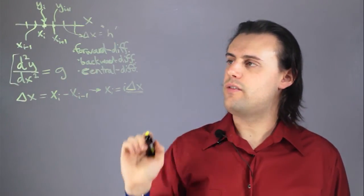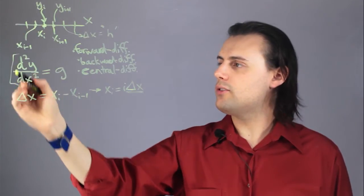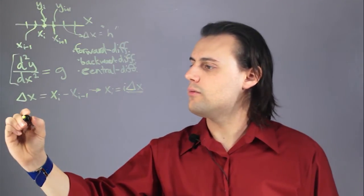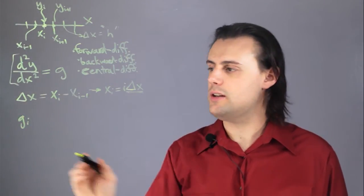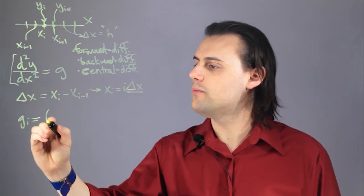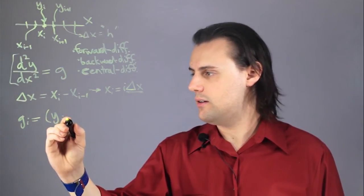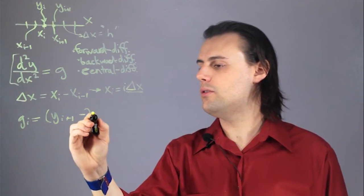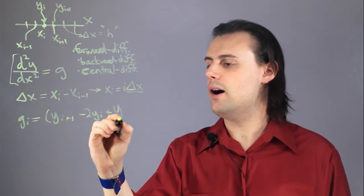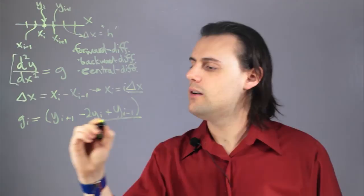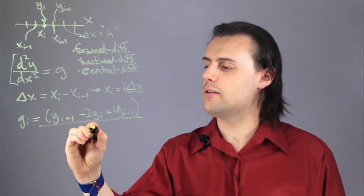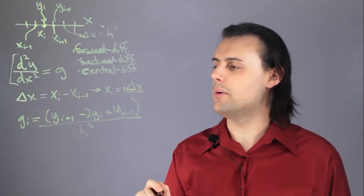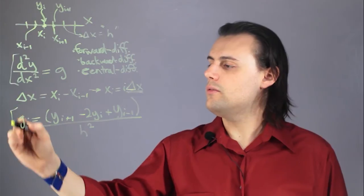We can discretize this second order differential equation and write down the ith value of g as being equal to y sub i plus one minus two y sub i plus y sub i minus one, all divided by h squared, because this is the dx squared which we've already defined up above.